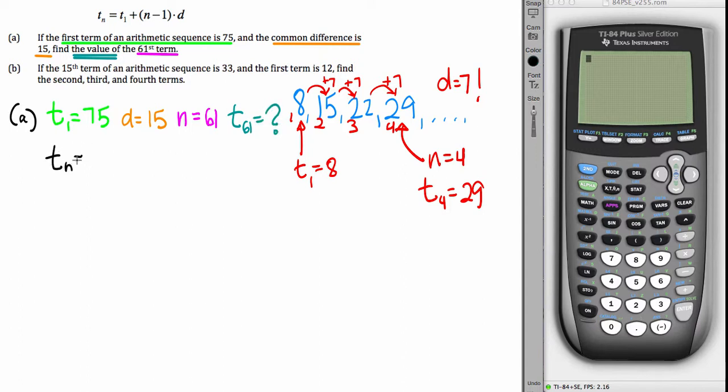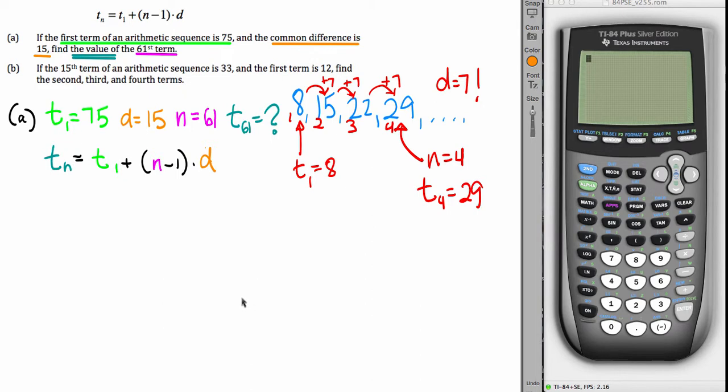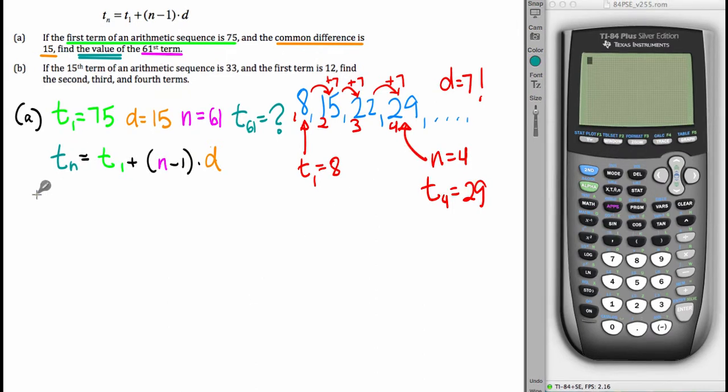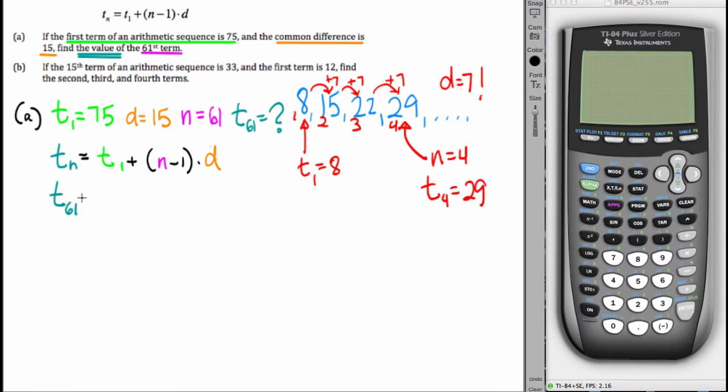Here's the general formula for an arithmetic sequence. That's with the Tn, etc. And what we need to do is figure out how each of the pieces fits in. That's why the color. T sub n, that's what we don't know, so we're looking for T61. The very first term is 75.